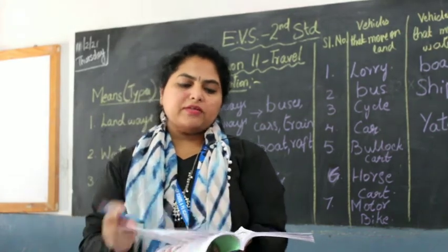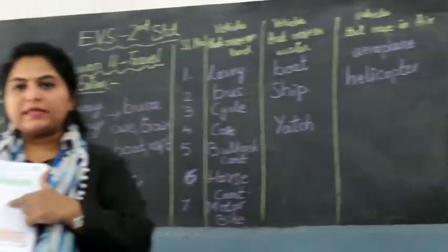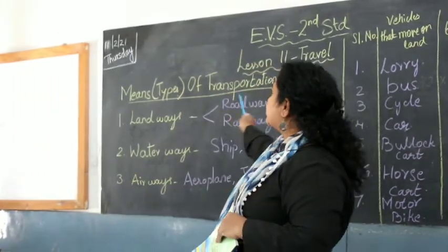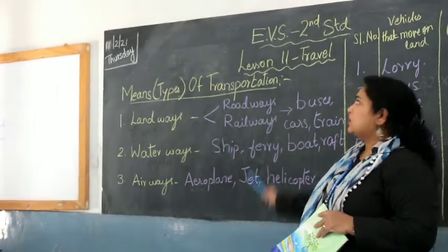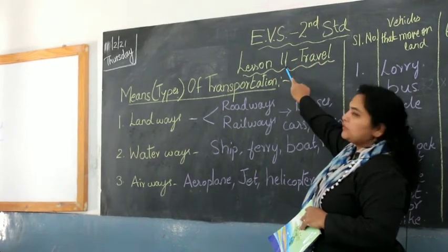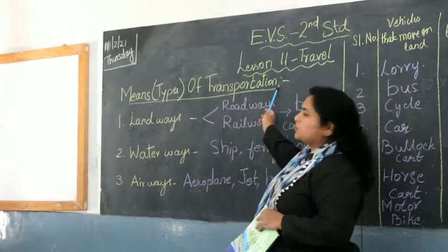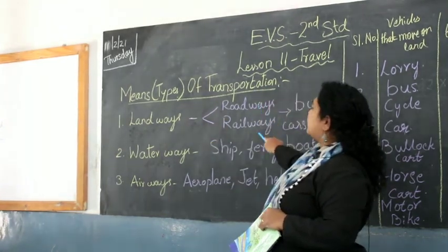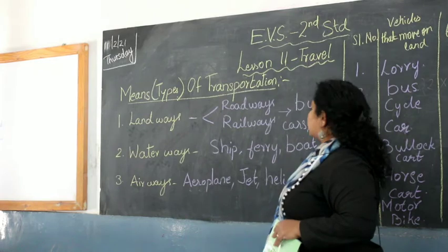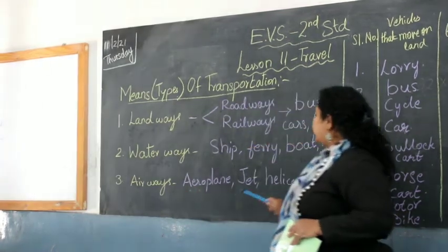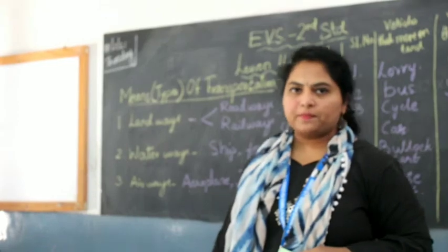We have come to the end of the lesson. I will send you all the notes. Copy what's on the board and write it in your book. In your EBS classwork book, write Lesson 11, chapter Travel as the heading. Then write means or types of transportation: Landways (roadways and railways) — examples: bus, car, train. Waterways — examples: ship, ferry, boat, raft. Airways — examples: aeroplane, jet, helicopter. Please write it down in your notebook and send the photo to me. Thank you, take care.